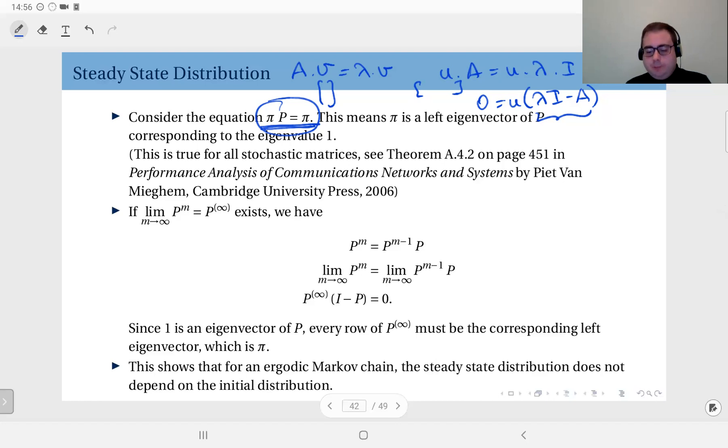Now going back to the m-step transition probabilities, we will observe that this has a limit. If this limit exists, which we will denote by P∞...